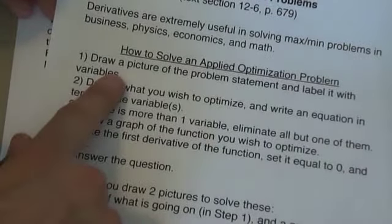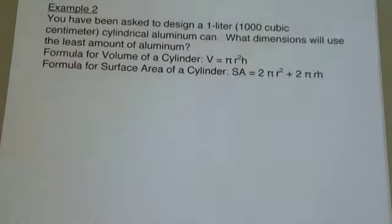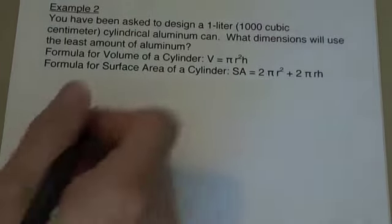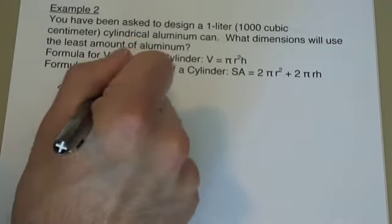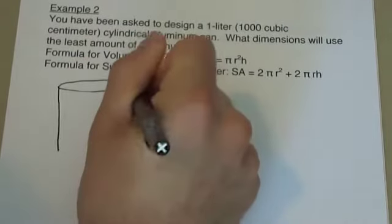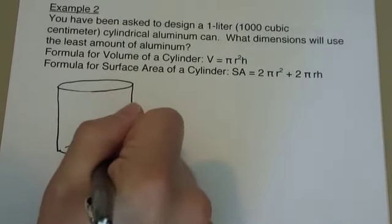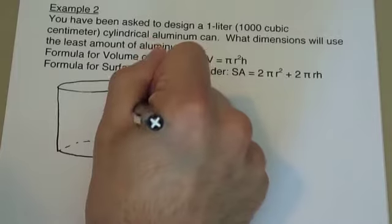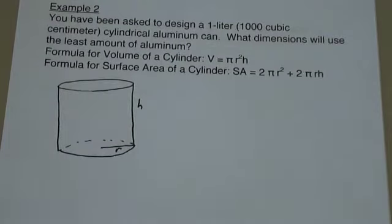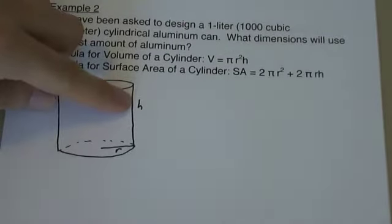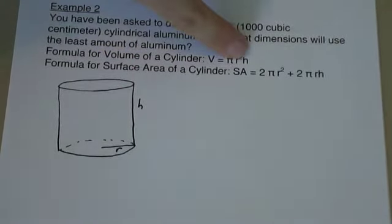First step: draw a picture of the problem statement and label it with variables. So we're designing a 1 liter cylindrical aluminum can. That's my picture labeled with variables for the radius and height of the can. I'm using radius and height here instead of diameter because the formulas we're going to use are in terms of radius and height.